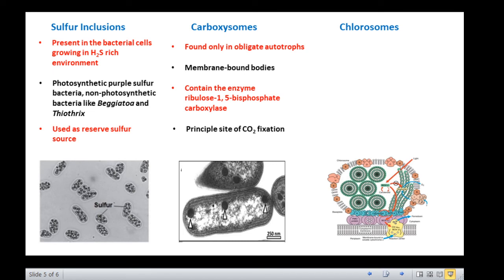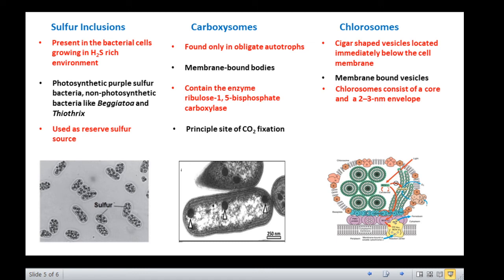Chlorosomes are present in photosynthetic green bacteria. These are cigar shaped vesicles located immediately below the cell membrane. They are membrane bound vesicles 50 nanometer wide and 100-250 nanometer long visible only under electron microscope. All chlorosomes consist of a core and a 2-3 nanometer envelope. The core consists of rod elements made up of aggregated chlorophyll while the envelope is a monolayer of mostly galactolipid and some proteins. Chlorosomes are principally sites of photosynthesis.